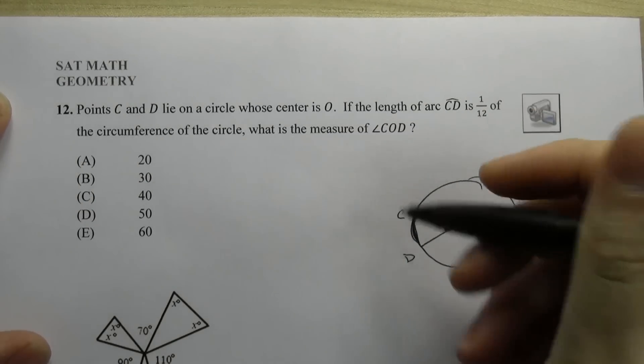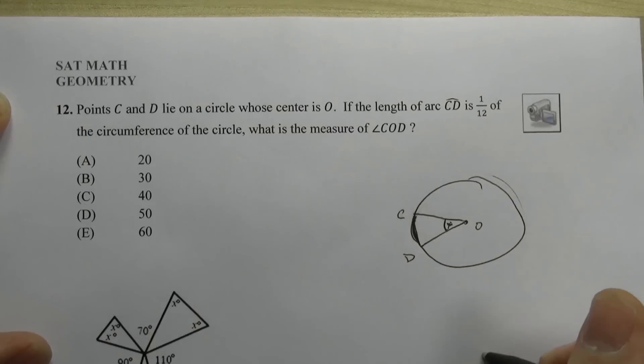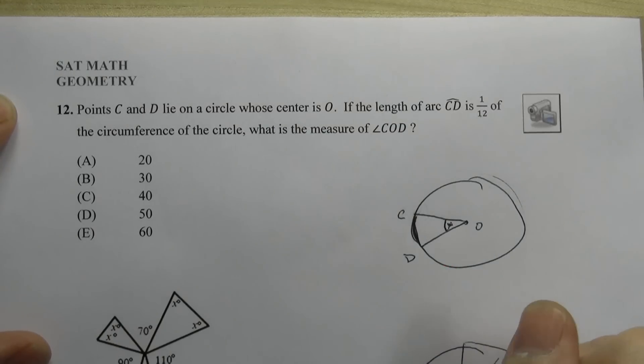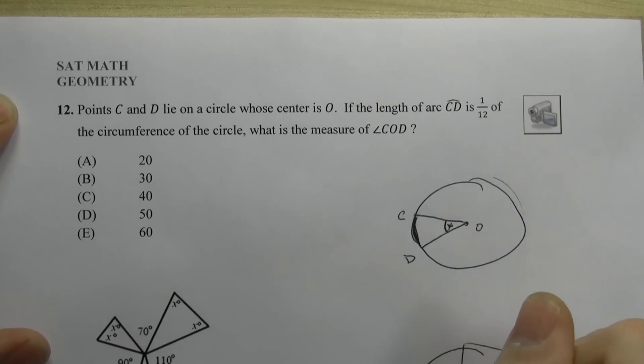So what I mean by that is if you look at a pizza, traditional pizza is cut into eight slices, right? Now each of these slices represents an eighth of the pizza. So each of these angles is one eighth of 360 degrees, in this case, 45 degrees.